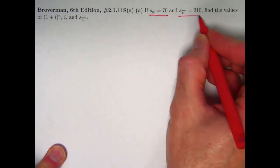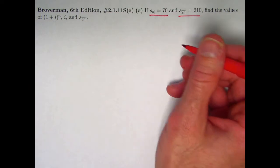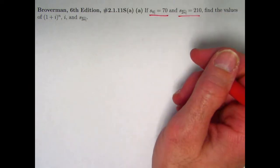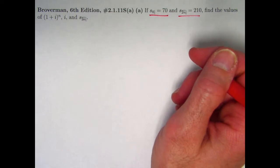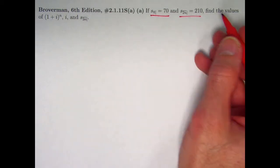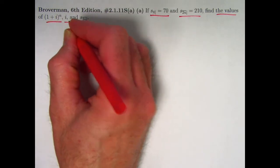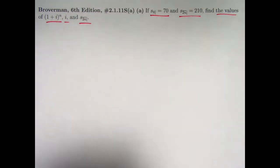s_2n is a similar idea except with 2n payments of one, and we are finding the future value immediately after the 2nth payment. We are given those things. We need to find values of three things: (1+i)^n, i, and s_3n.